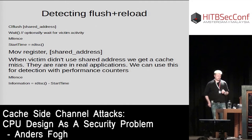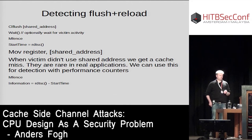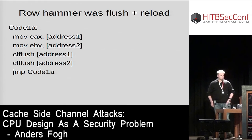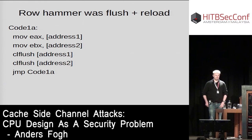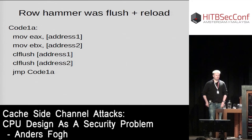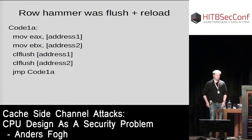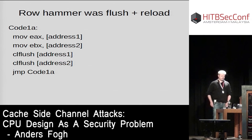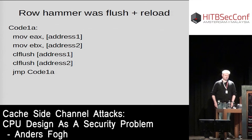Going back to the Rowhammer story I told at the beginning: if you look at Flush+Reload and remove everything to do with timing and do this on two addresses, you get the original code from the original Rowhammer paper. Rowhammer was Flush+Reload — there's no coincidence that my Rowhammer detection detected my Flush+Reload attack. For those interested in Rowhammer-JS, it replaced the CLFLUSH instructions — not available in JavaScript — with evict routines that work by accessing memory in a pattern, which is possible in JavaScript.